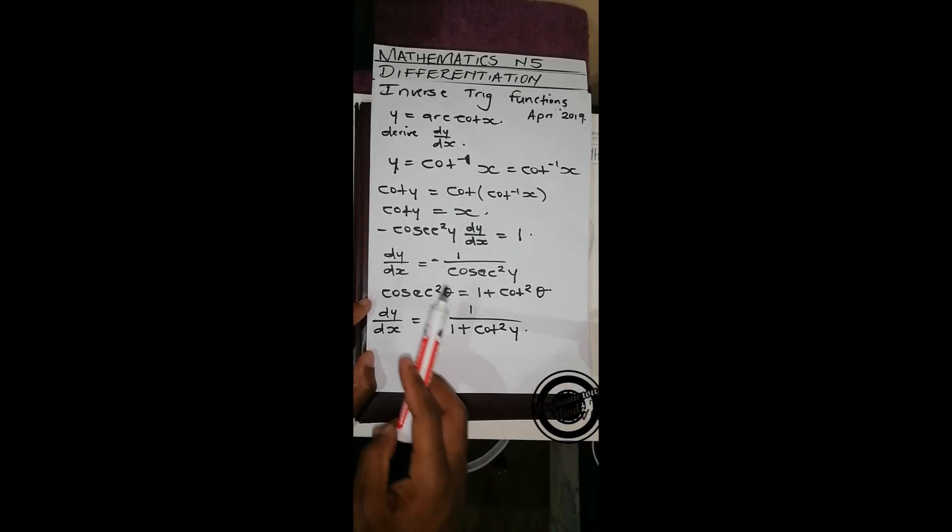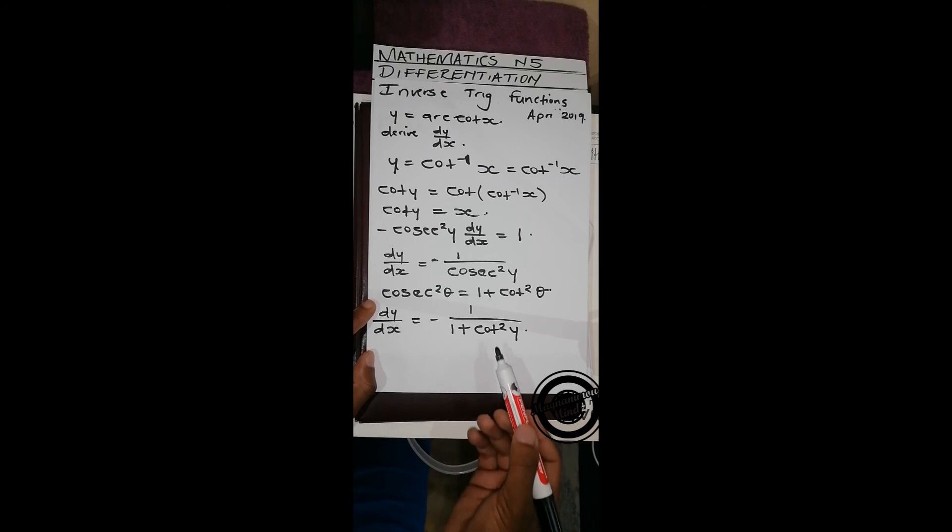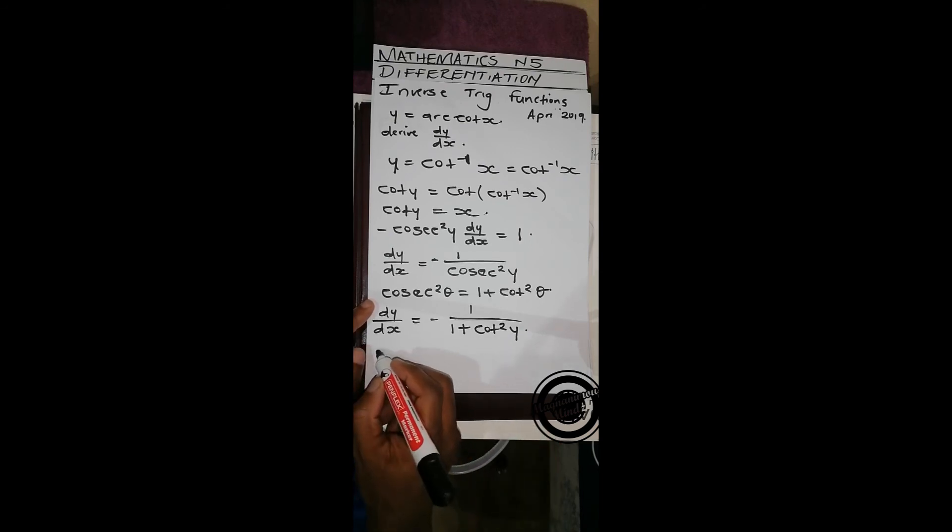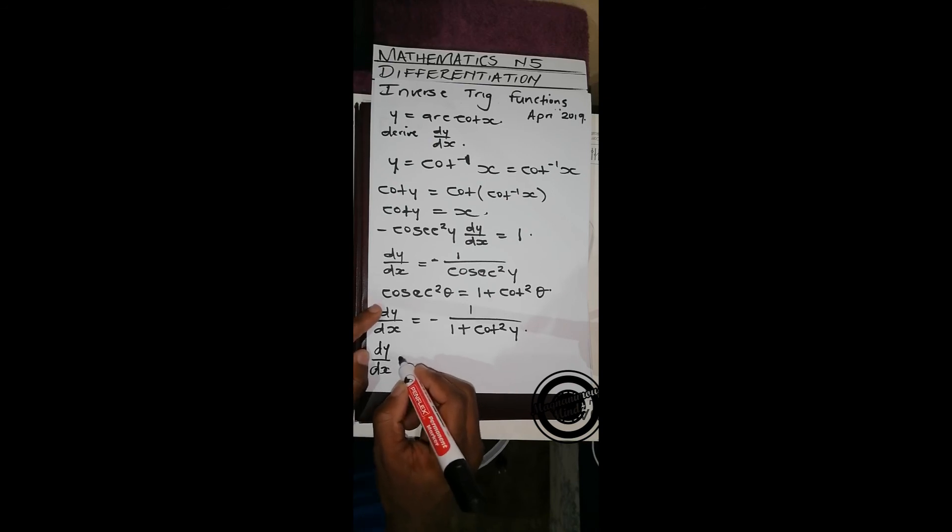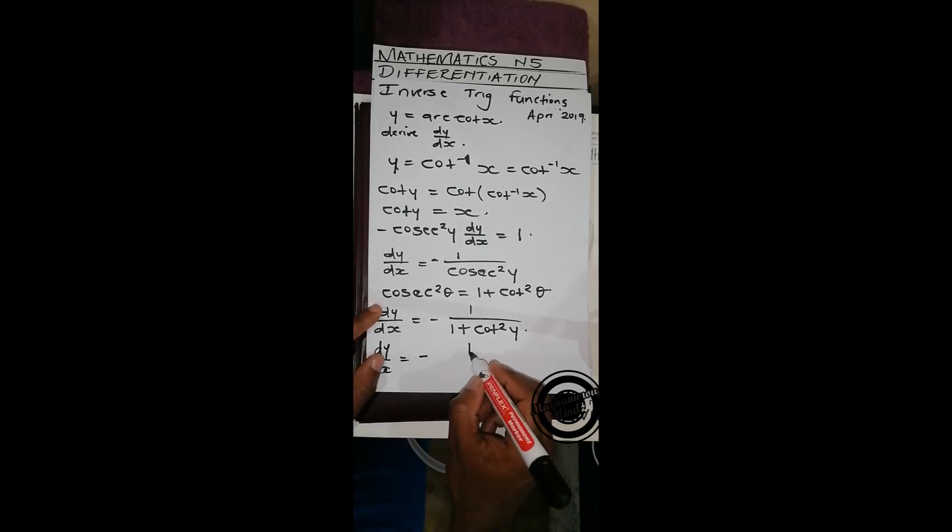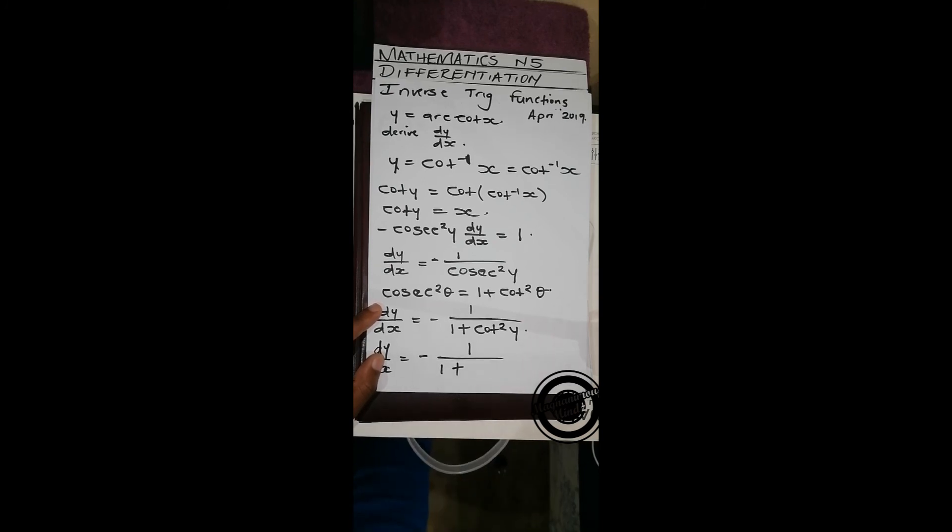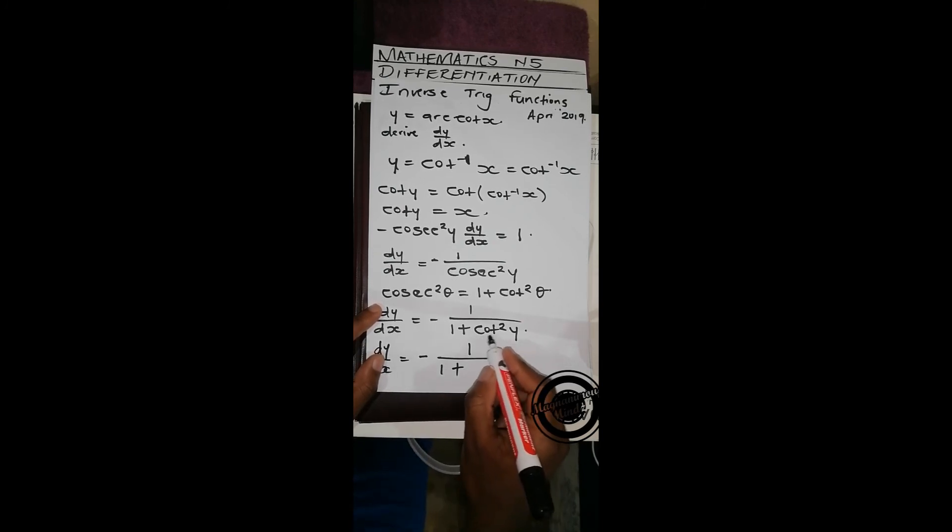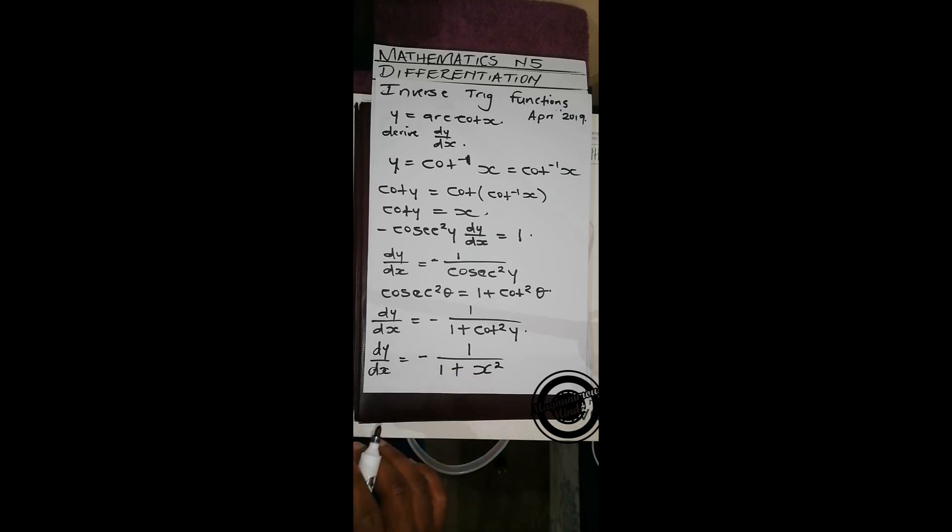Then remember here we got that cot y equals x, so we replace that here and we'll have dy over dx equals negative 1 over 1 plus x squared. That's it for this question.